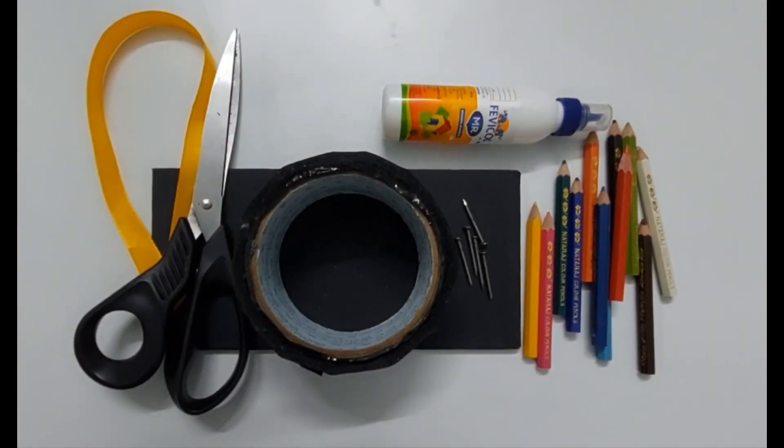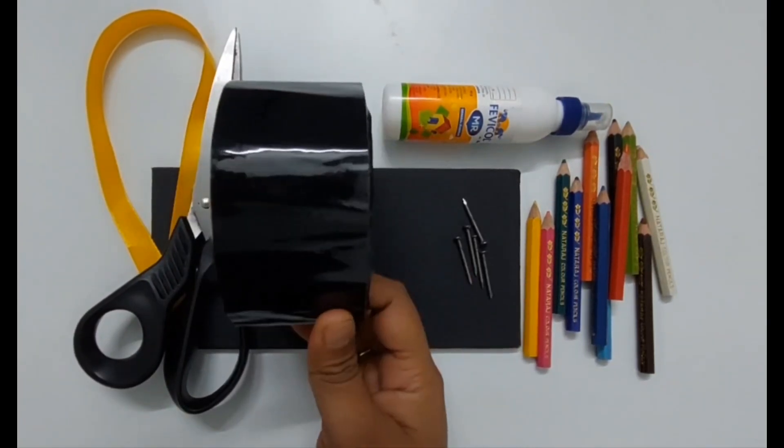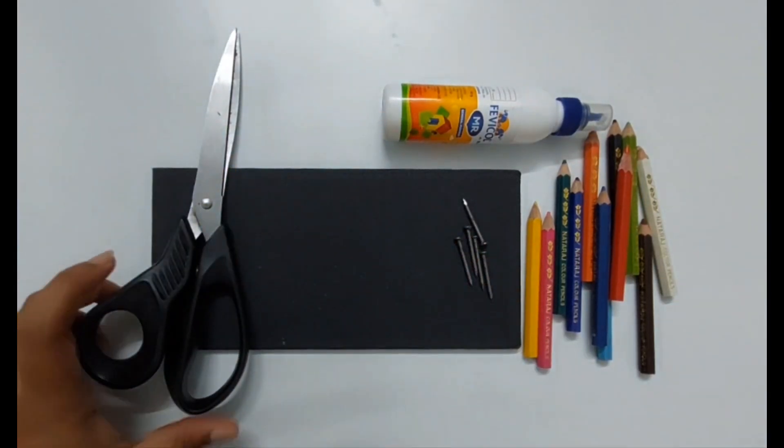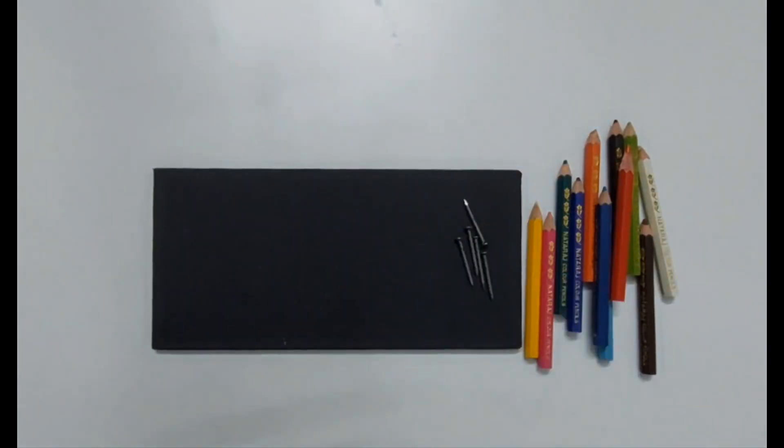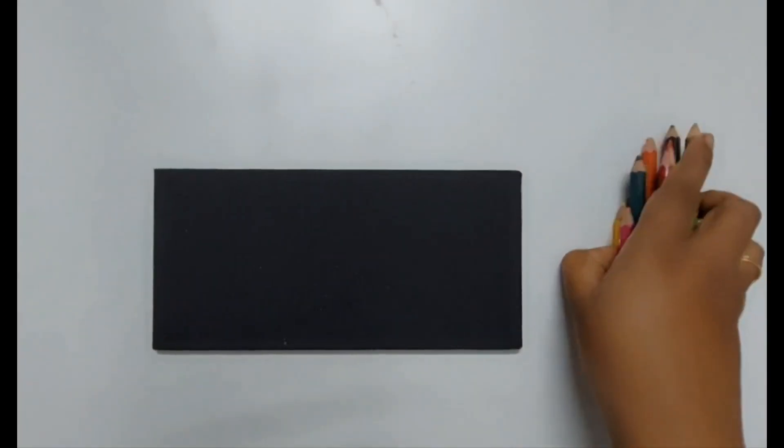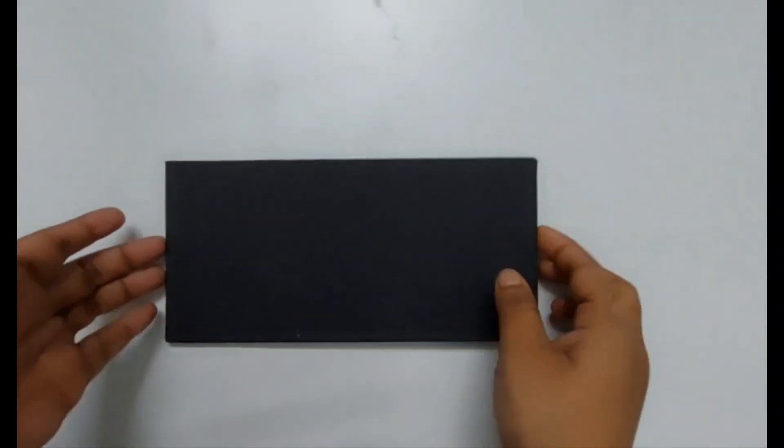Hi everyone, today I am going to show you how to make a key holder. For this you will need cello tape, ribbon, scissors, fabric glue, nails, and color pencils. Now let me start using this canvas board.